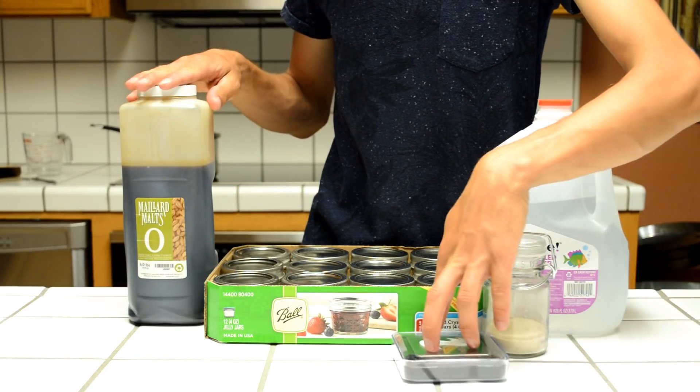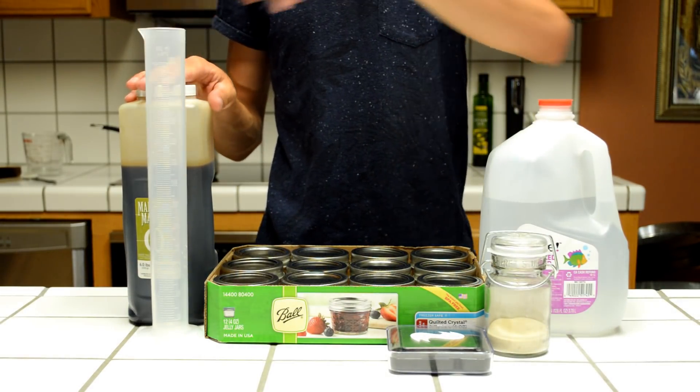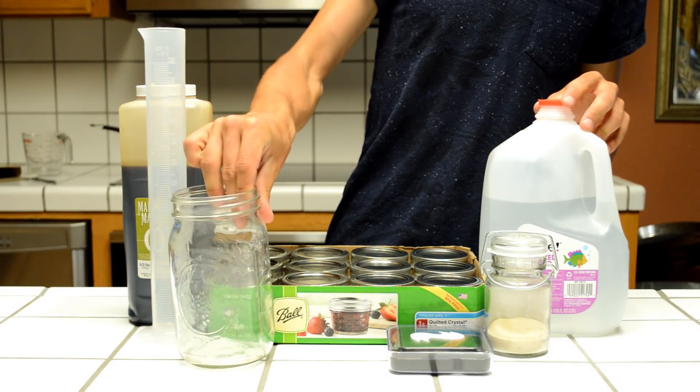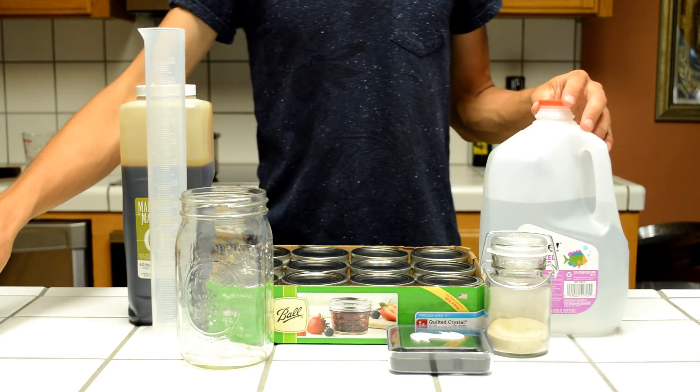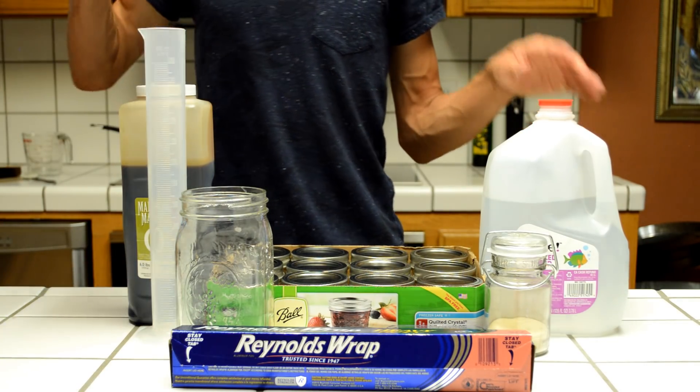Other materials you will need include a small scale, some sort of measuring cup, a large mixing jar, and a pressure cooker for the vital role of sterilization.